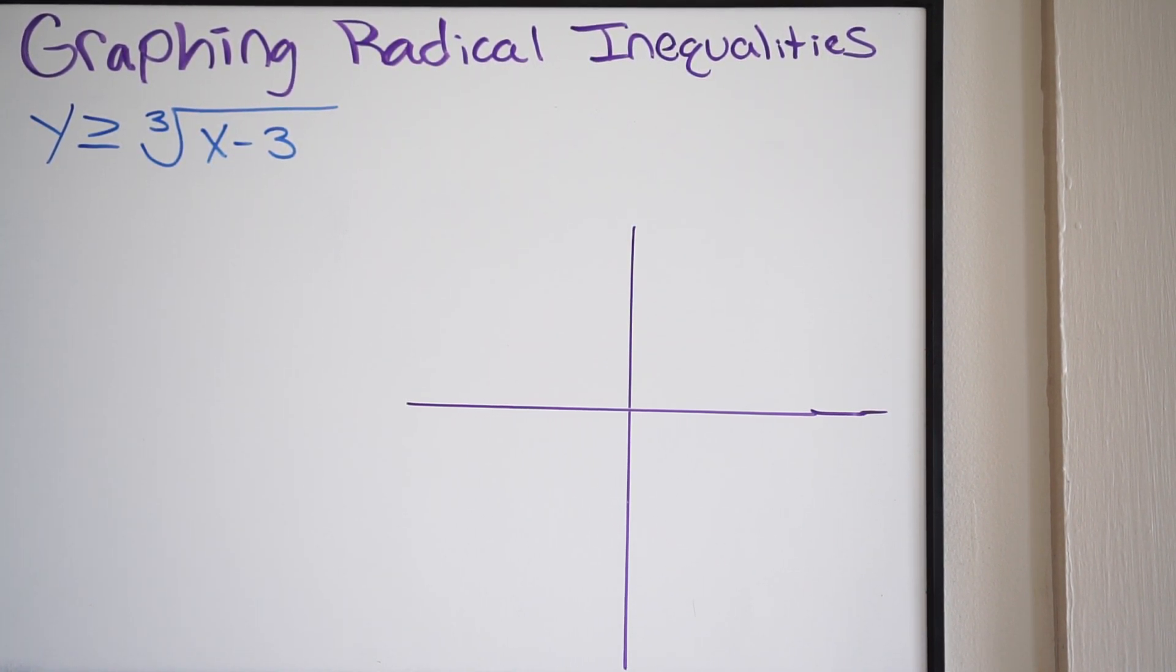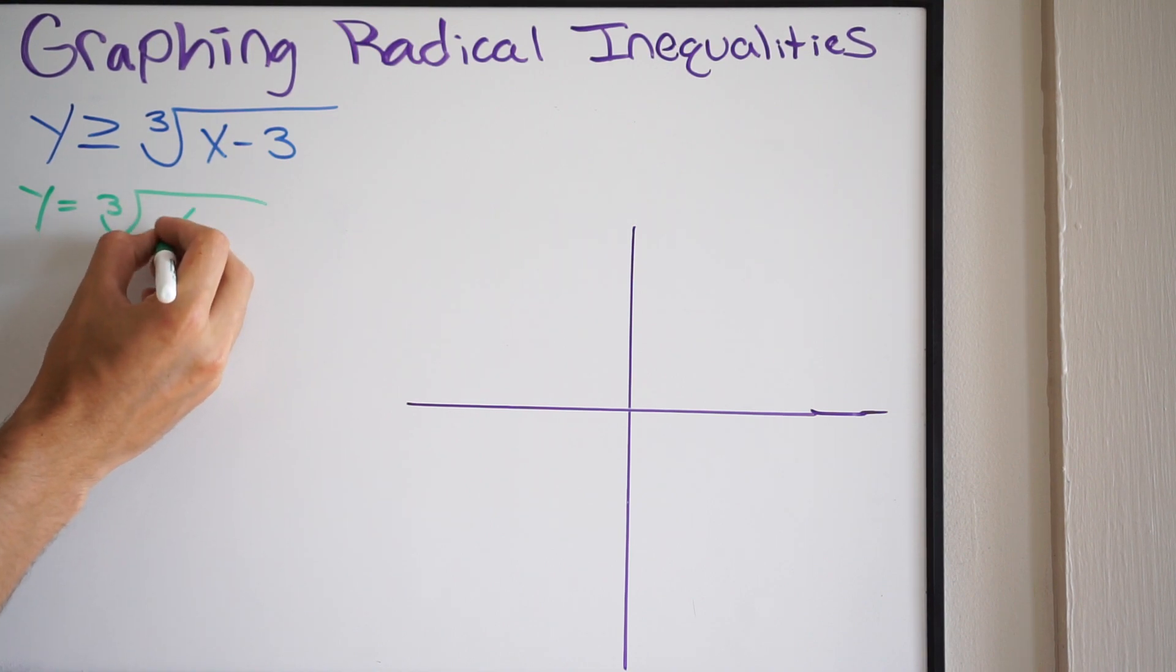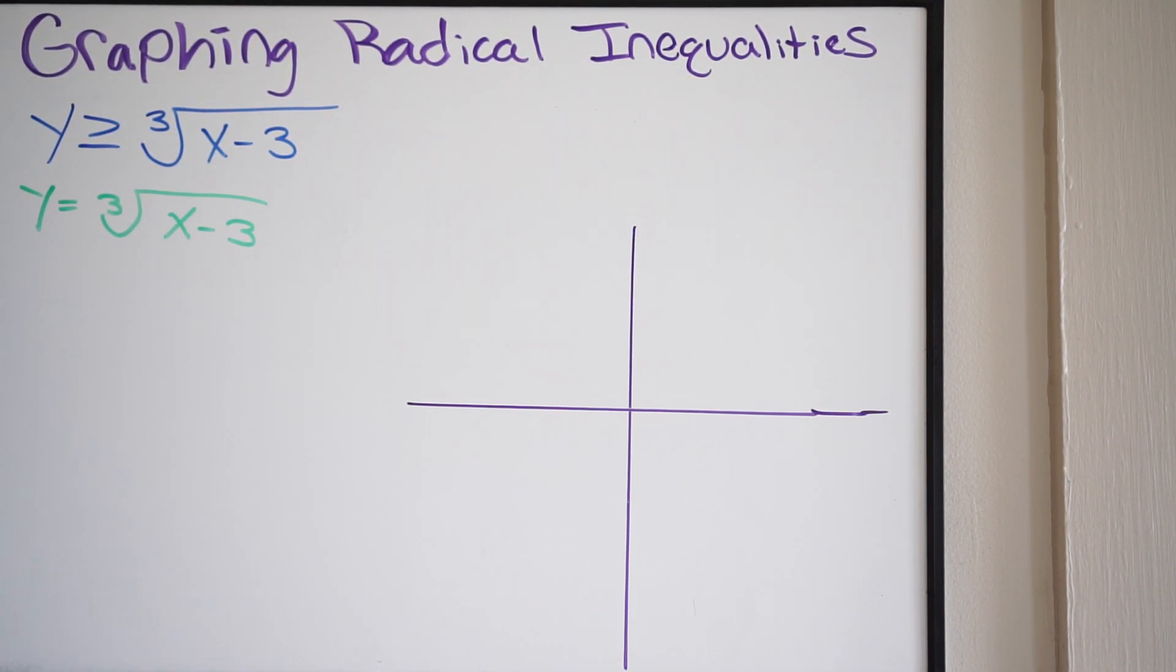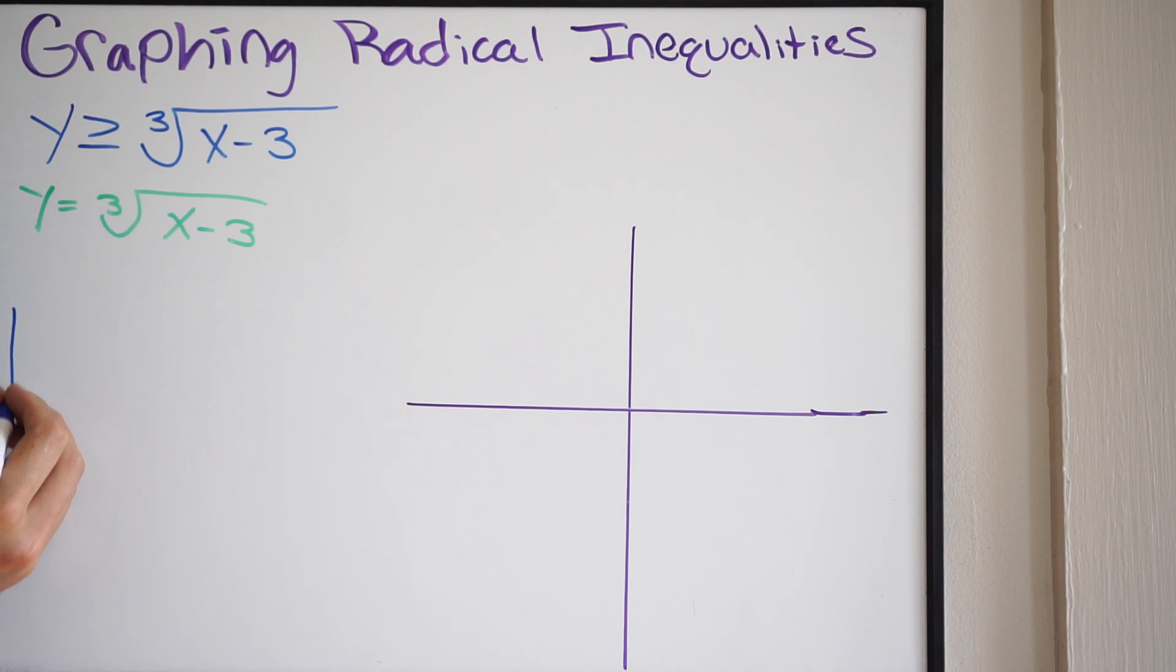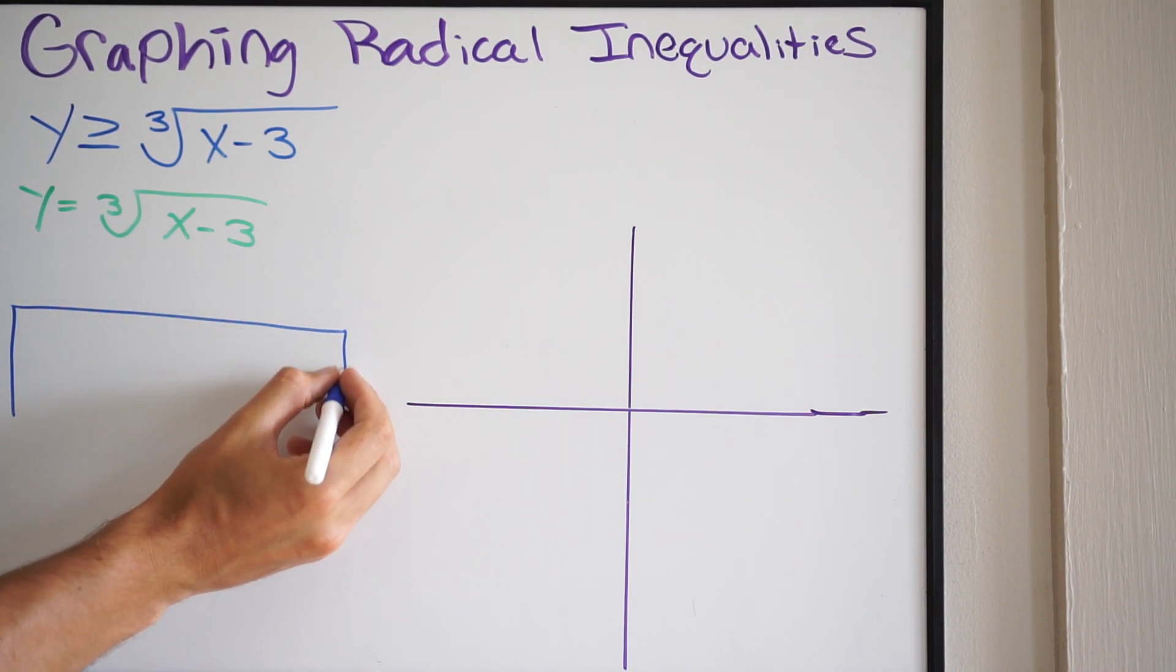So the first step, as always, is to set this up so you can graph it. So we're going to replace this inequality with an equal sign. So we have y equals the cubed root of x minus 3. And you can go ahead and plug this into your graphing calculator at this point and use the table of values to get some points on this graph, and you can go ahead and graph it out. Or you can build your own table of values, so that's what I'm going to do here. I'm going to build my own table of values.